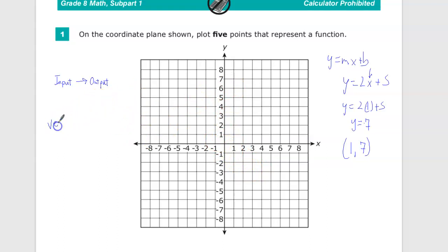The easiest way on a graph to tell whether or not it's a function is to use what's called the vertical line test. What that means is you're just going to draw vertical lines. Vertical means straight up and down.